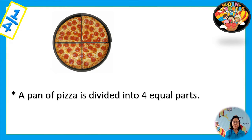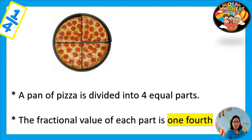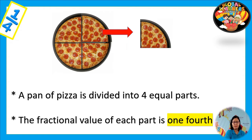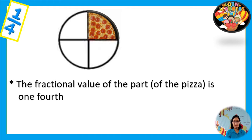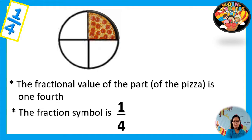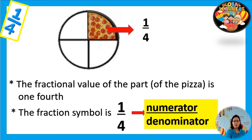Now we have a pan of pizza that is divided into four equal parts. The fractional value of each part is one fourth. The fraction symbol is one as the numerator and fourth as the denominator.